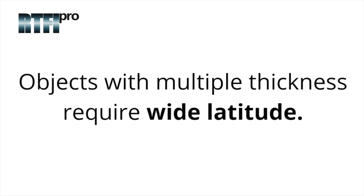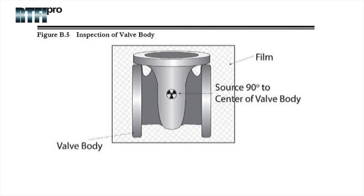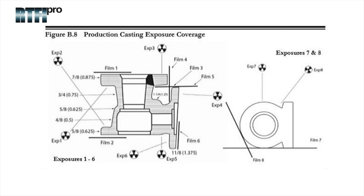And in some cases, a few radiographs are required to be taken to achieve the required density. In industrial radiography, film latitude is an important parameter as the density of welds and object thickness can vary inconsistently within a radiograph. These inconsistencies are more noticeable when inspecting valve welds, transition welds, and castings of variable thicknesses.